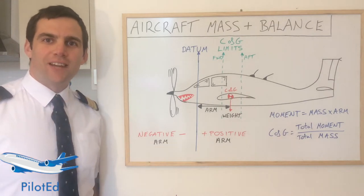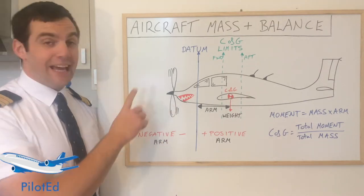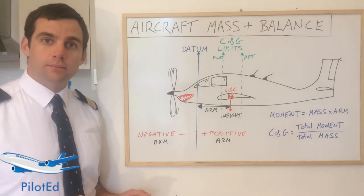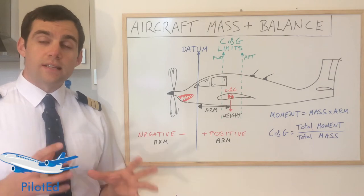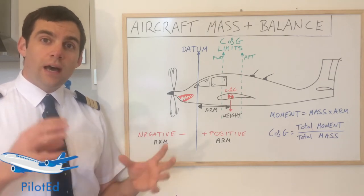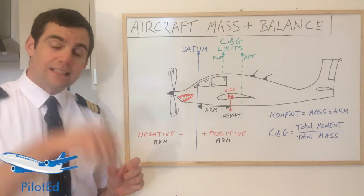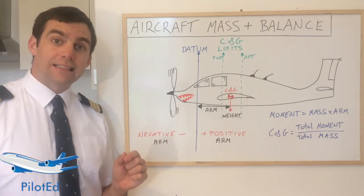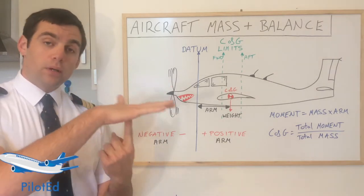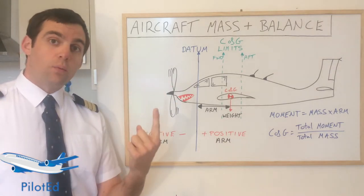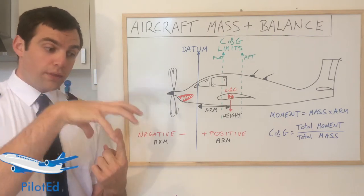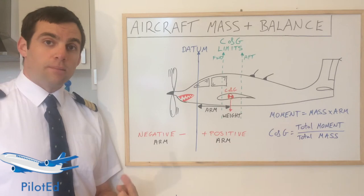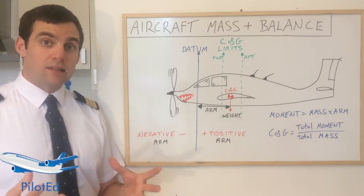Welcome to ATPL Theory. Today we're going to be talking about aircraft mass and balance and where all the terms you might hear come from. Center of gravity is the point at which the mass of an object acts in a downward direction — essentially where all the masses congregate and act downward. It's the balance point at which, if you could hold the aircraft with one finger, it would balance on. All the forces are acting through that point in a downward direction, making it the center of balance.